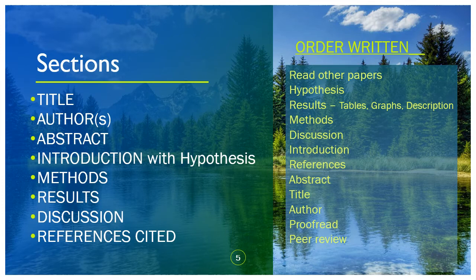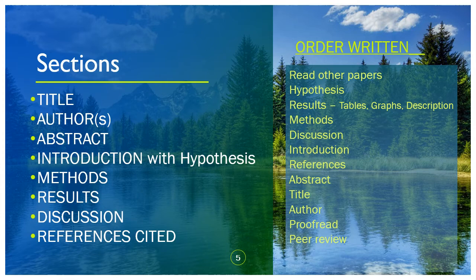Even though we have the sections in a certain order when we write, we mix it up a little bit. First, we're going to read other papers and come up with a hypothesis. Then you're going to graph out your results, compile the class data into tables, make some graphs, and come up with descriptions of those graphs that only deal with your hypothesis. Then we'll work on the methods, then the discussion and introduction — I usually write those together, going back and forth — then references, abstract, title and author. And then you need to proofread, probably producing second and third drafts and maybe sending it to others for review.